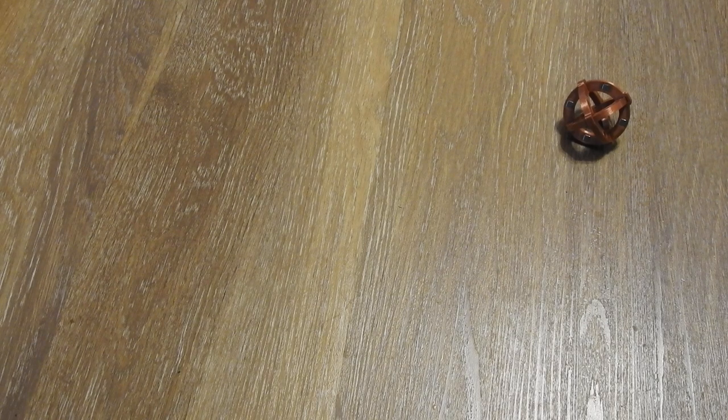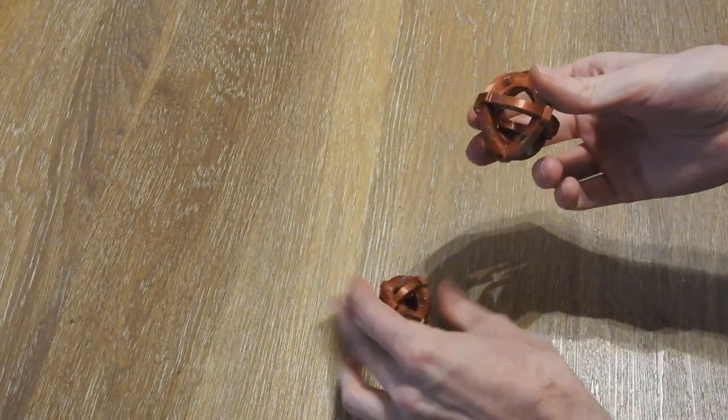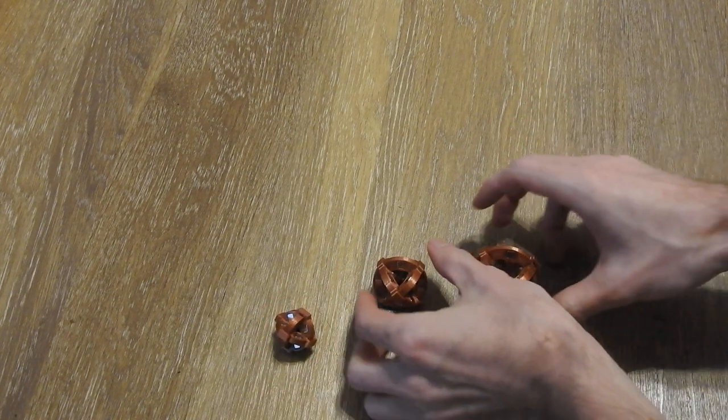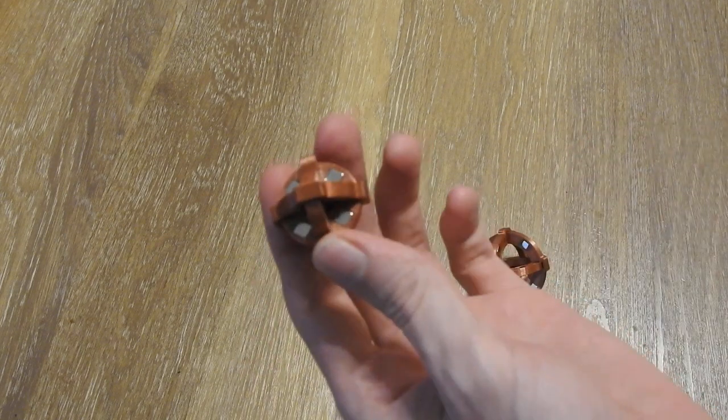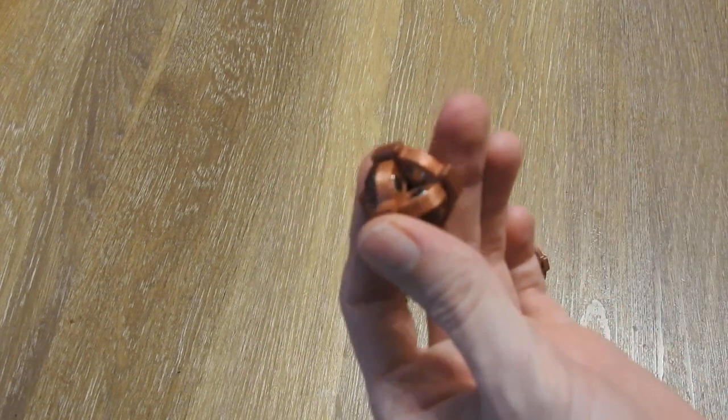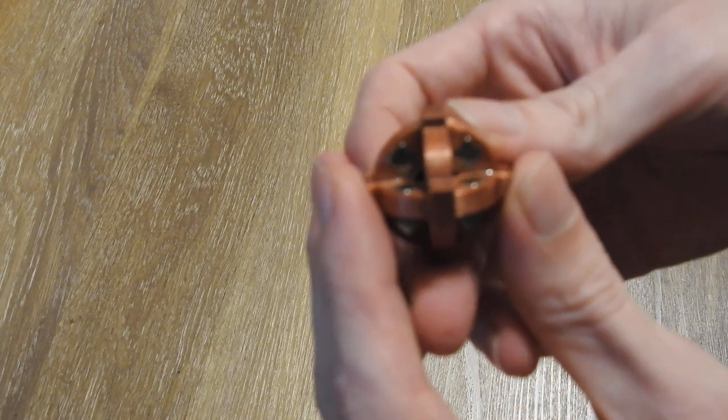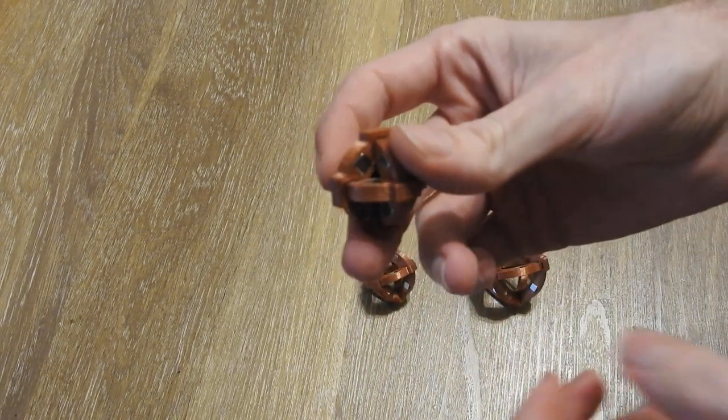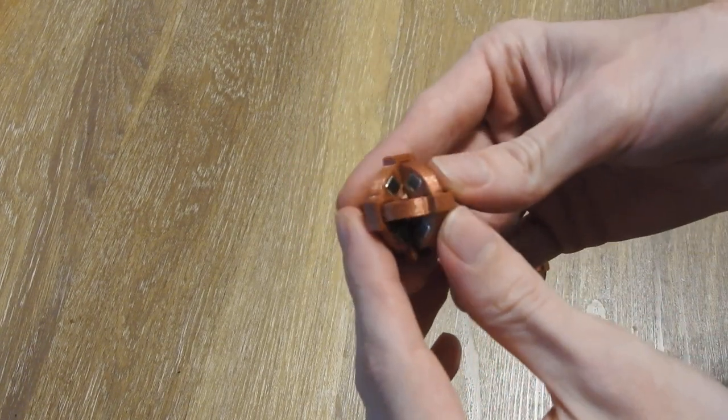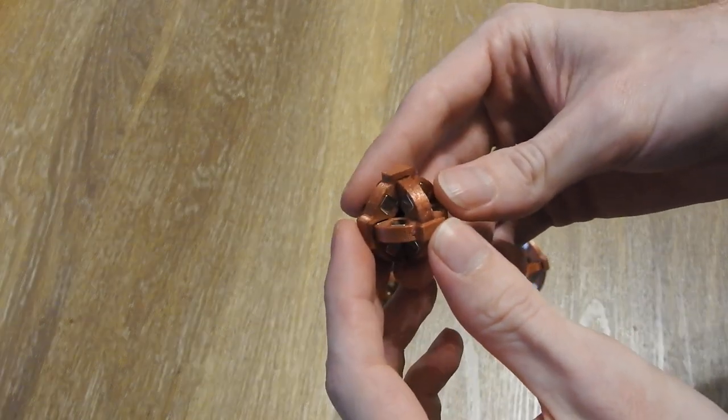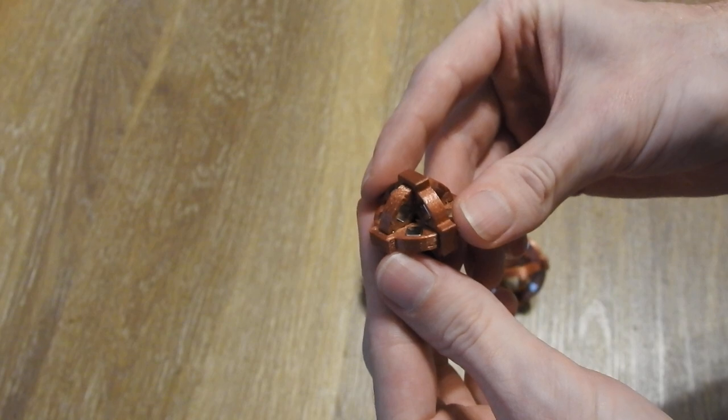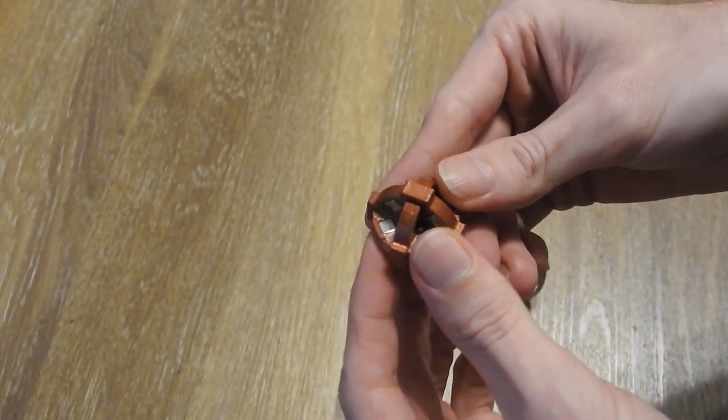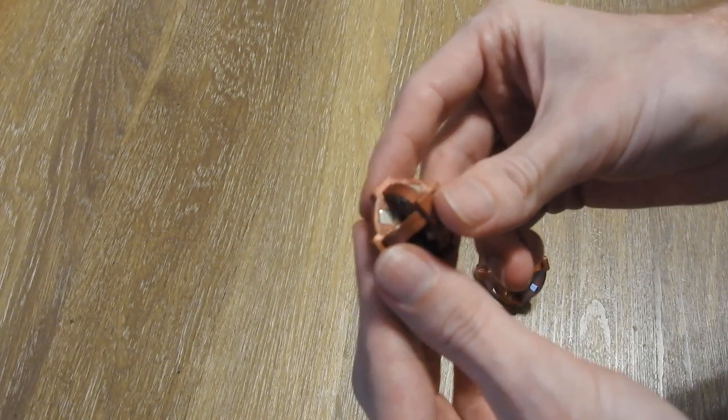And I have made three of these arrays. So in different sizes. I have made here the smallest possible one. Let me get the camera focused. I will show it a bit further away. So this is the smallest possible array you can achieve with this five millimeter cube magnet.